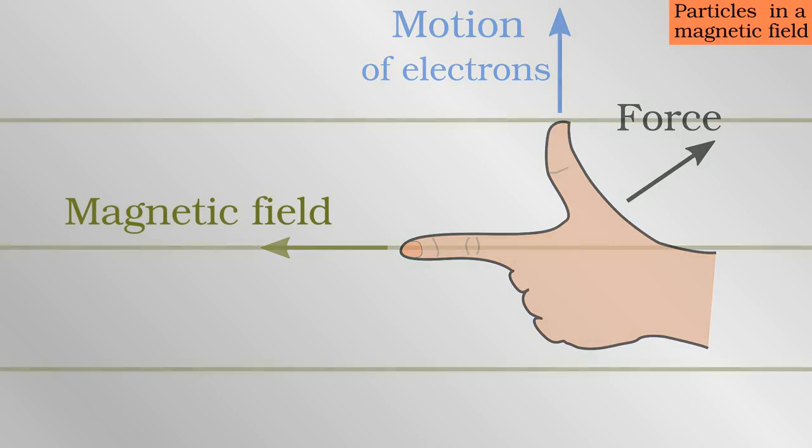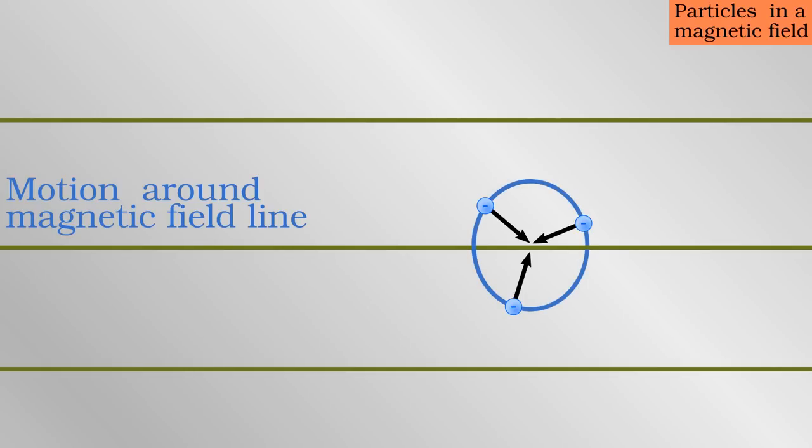These simple memory aids illustrate that the magnetic force is always perpendicular to the direction of motion. This means that a charged particle moving at a right angle to the magnetic field will orbit around it in a circle.